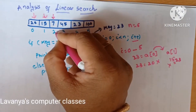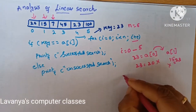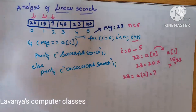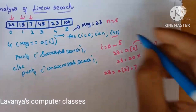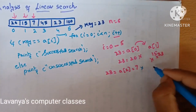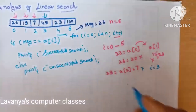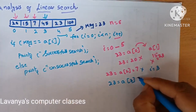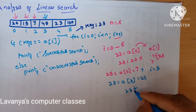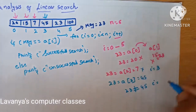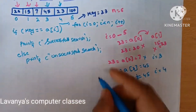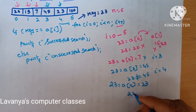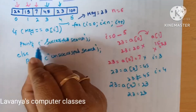Then again i plus plus, i value is coming to 2. Key value is 23 — what is a[2]? a[2] is 7. Is 23 equal to 7? No. Again i plus plus, i value is now 3. Key element is 23 — what is a[3]? a[3] is 45. Is 23 equal to 45? No. Again i plus plus, i value is 4. Key value is 23 — a[4] is 23. So 23 equals 23 — yes! That means it is a successful search.